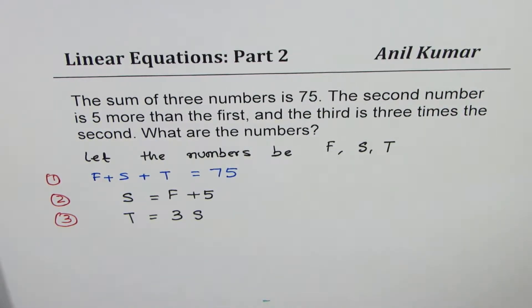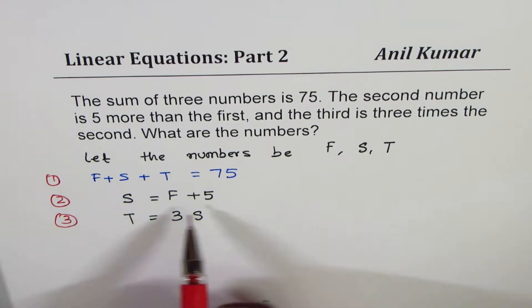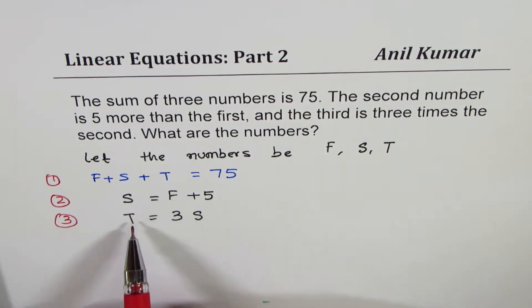It's a good idea to write everything in terms of one variable. We have S in terms of F, we have T in terms of S, so we could write that T = 3(F + 5).